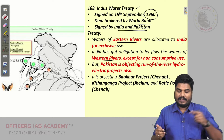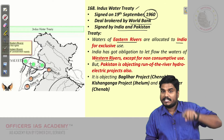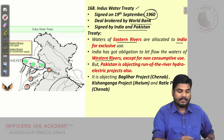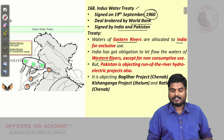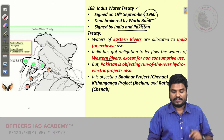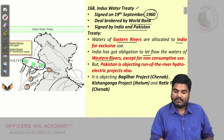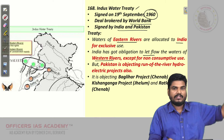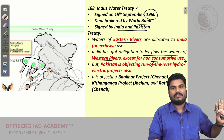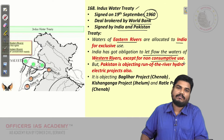So India can use the western rivers, which are for Pakistan only, for non-consumptive use. India has the obligation to let the waters of the western rivers flow to Pakistan, except for non-consumptive use — meaning India can use them for non-consumptive purposes.